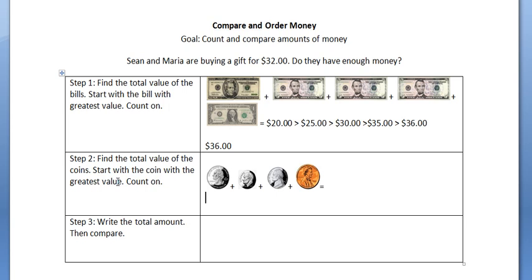Step 2 will be to find the value of the coins. Start with the coin with the greatest value and count on. Sean and Maria have one quarter, one dime, one nickel, and one penny.